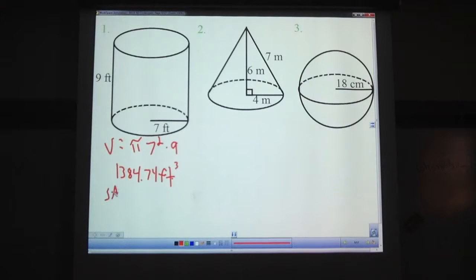Surface area. You should have this and this. So 2 pi 7 squared plus 2 pi 7 times 9. Sorry, I didn't do this in the calculator as I go over this with you. I'm getting 703.36. If there's a mistake on any of these, let me know so that I can note that in the comments. That's going to be square feet.